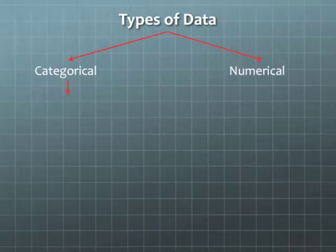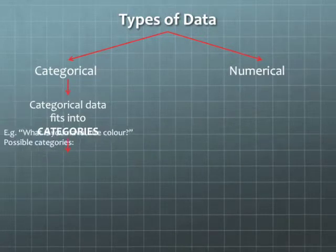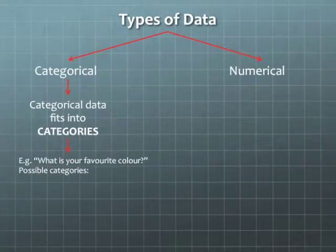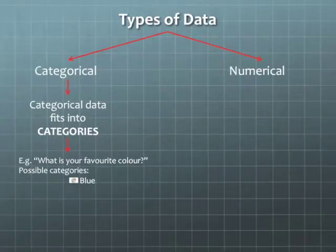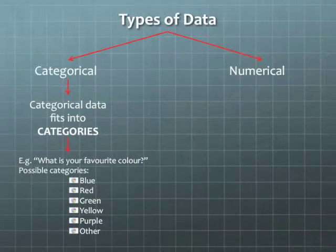Categorical data is data that can fit into categories. It can be organized into different types of categories depending on what the information is. For example, if we did a survey where one of the questions was, what is your favorite color? Possible answers, and therefore possible categories, could be blue, red, green, yellow, purple, or other. So each of those colors is a possible response, and it's also a possible category that the responses can fit into.